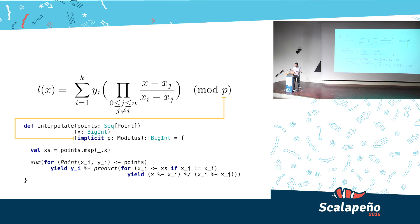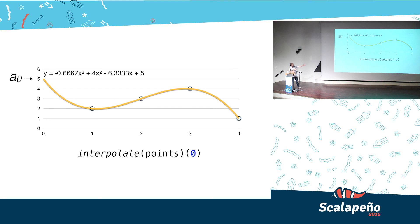Once we have that function, we can reassemble the polynomial, evaluate it at point zero. Point zero is the least significant coefficient, the secret that we wanted to protect earlier.